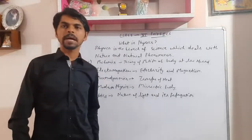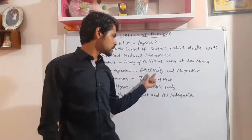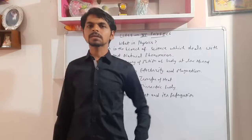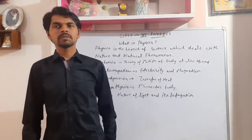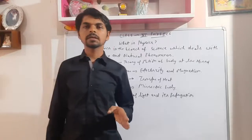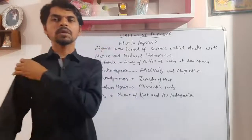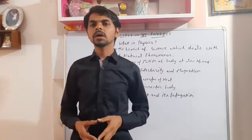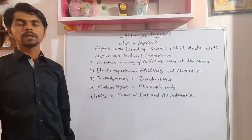The second branch is electromagnetism. This branch of physics deals with electricity and magnetism and their relation. You studied the electricity chapter and the magnetism chapter in class 10th physics. So electricity and magnetism together form the study of electromagnetism — what is the relation between them, how we can produce magnetism using electricity, or how electricity can be produced using magnetism.